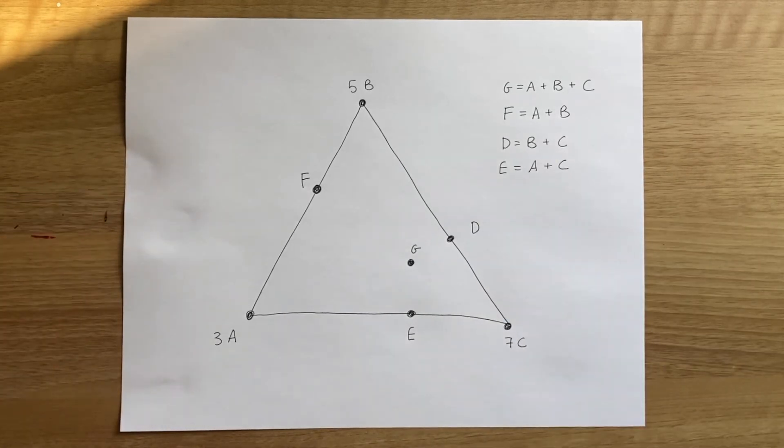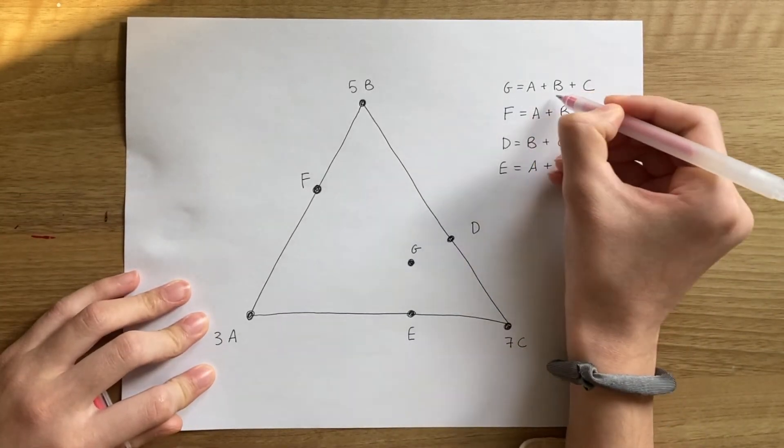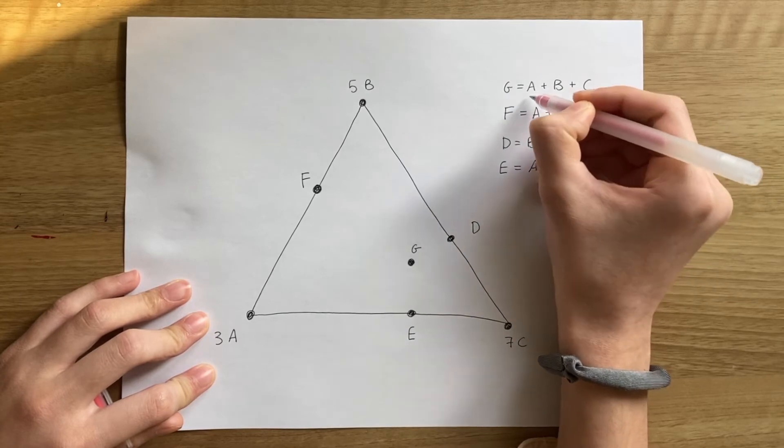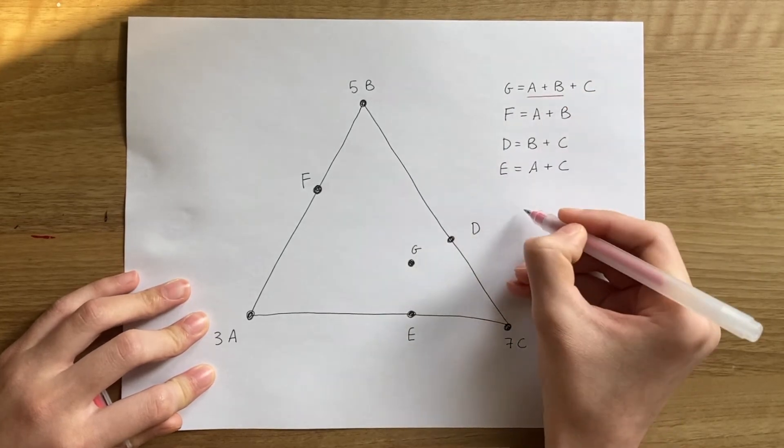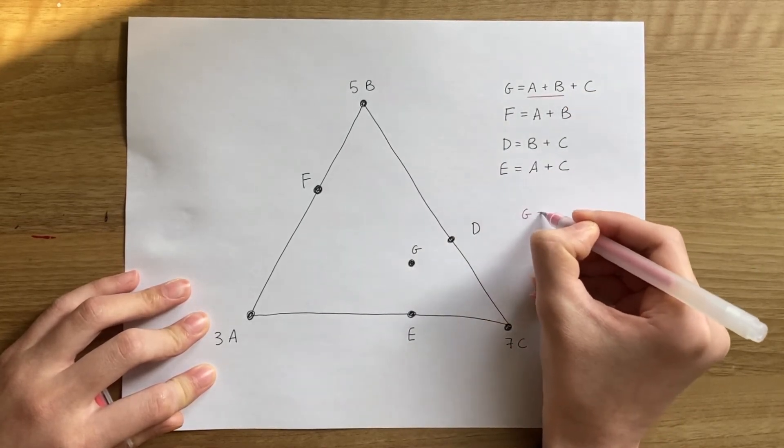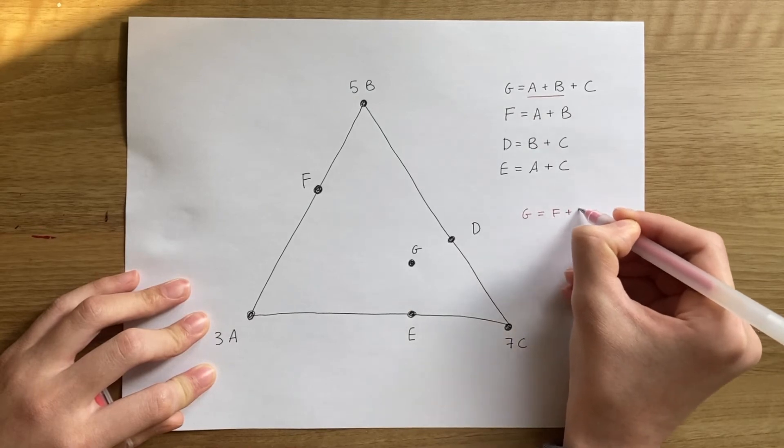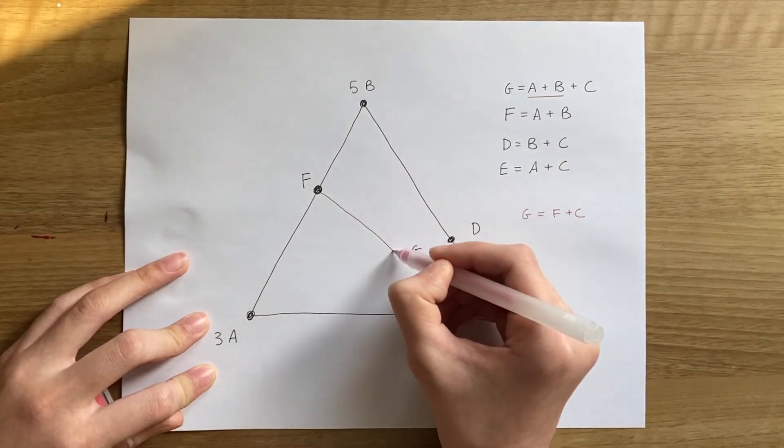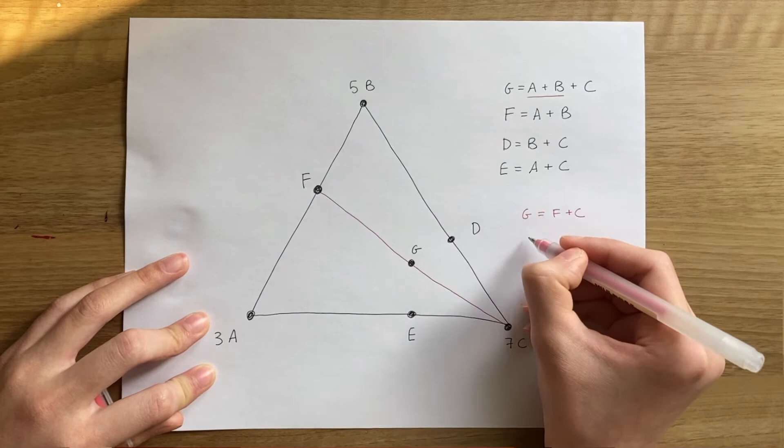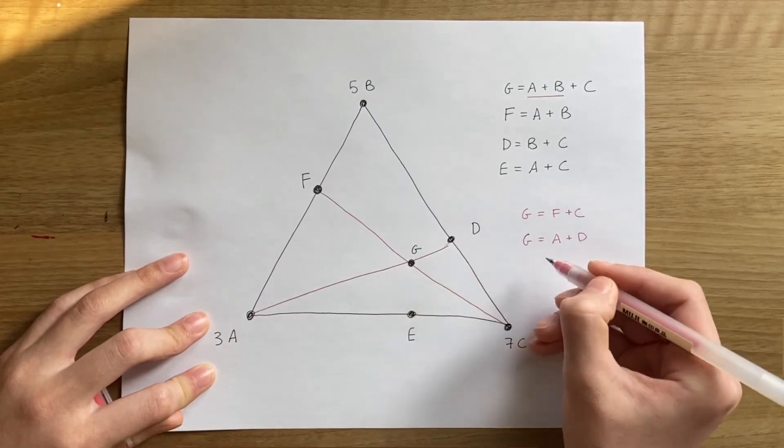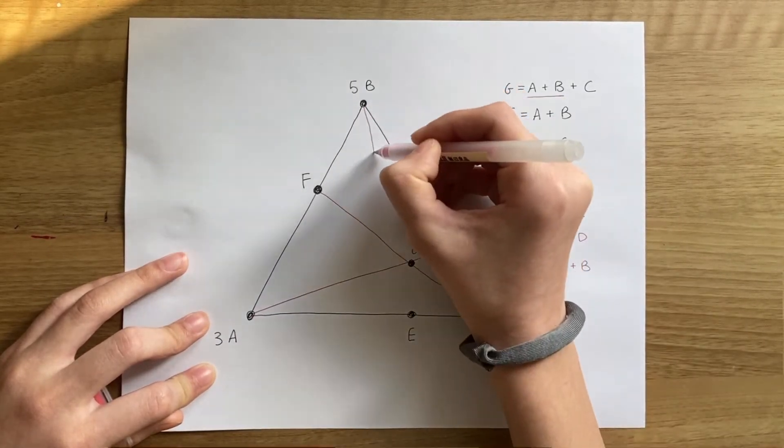To find G, you could take the center of mass of AB first, which is F, and then take the center of your result with C. This means that G must be the center of mass of F and C. By the same logic, G is the center of A and D, and it's also the center of B and E.